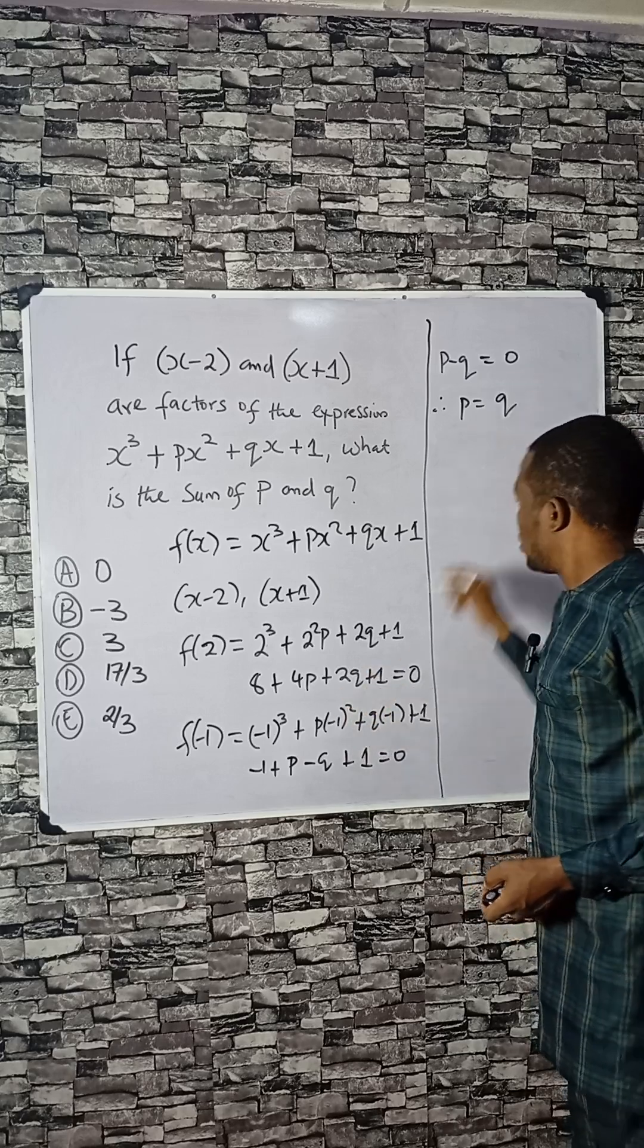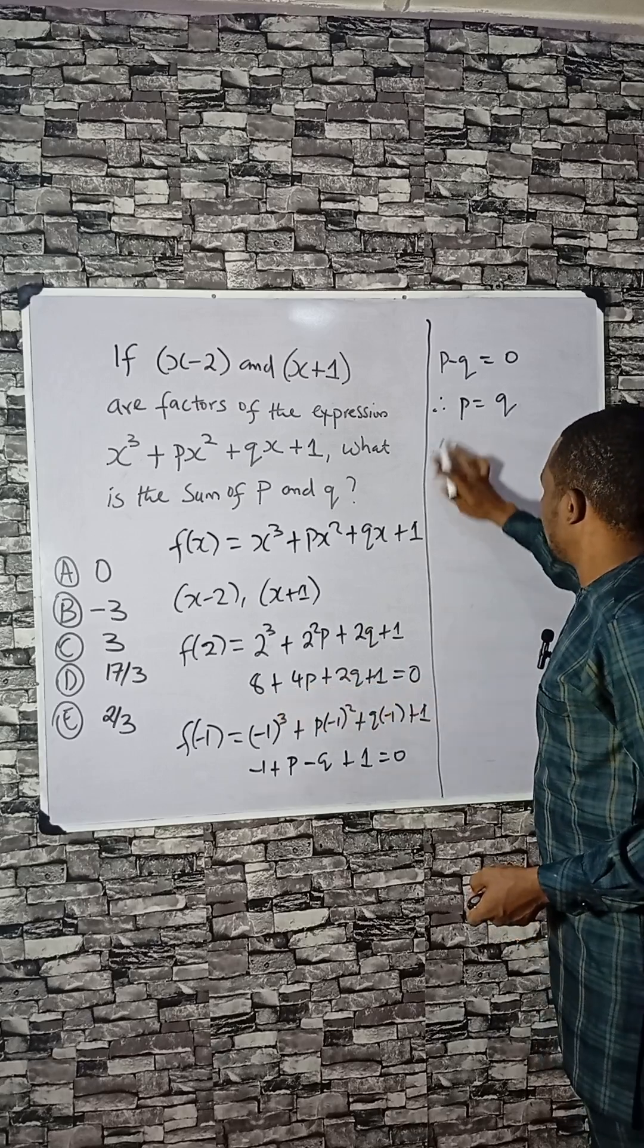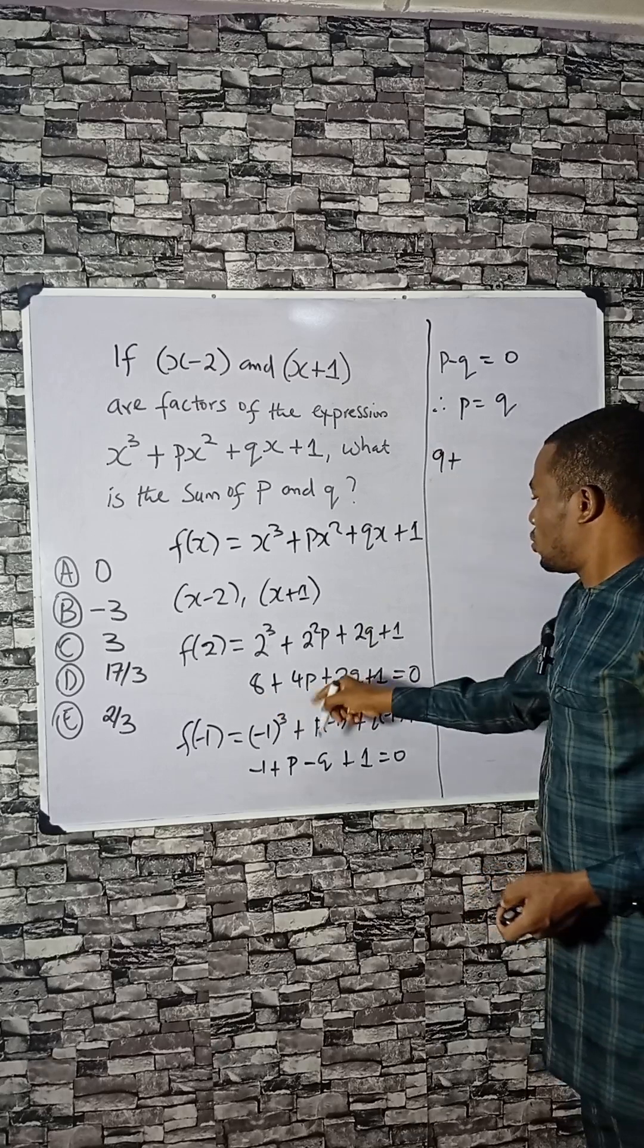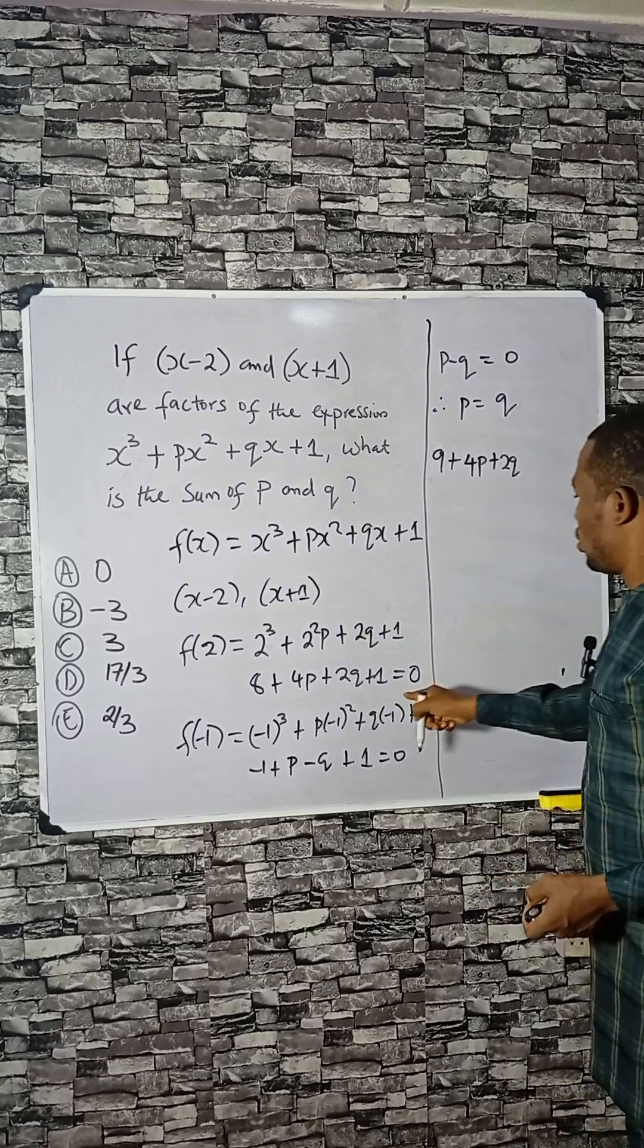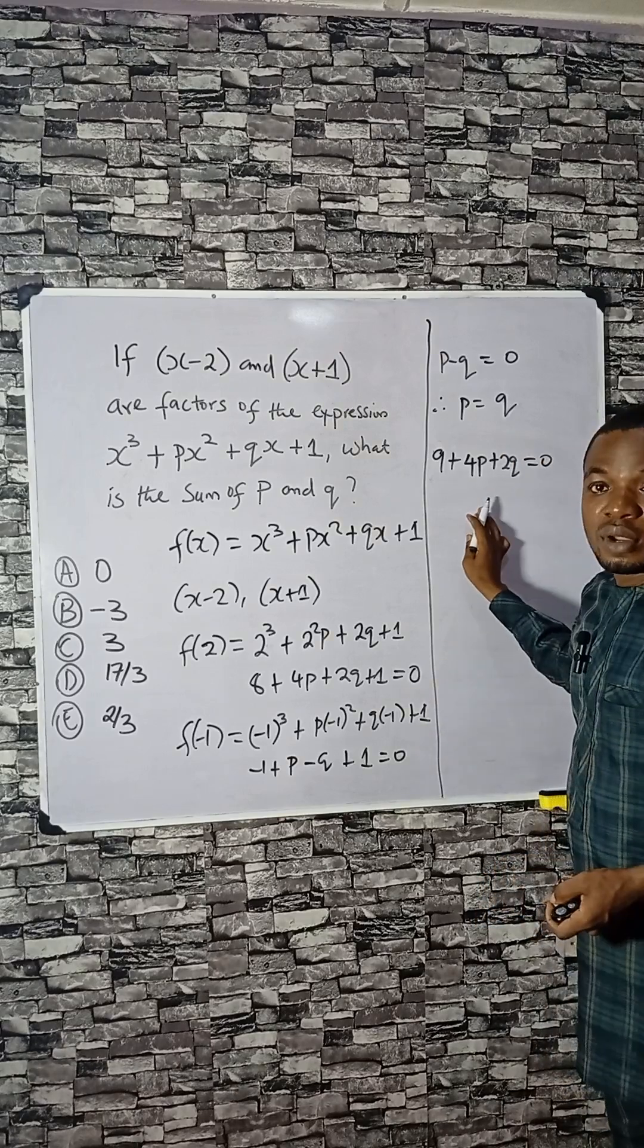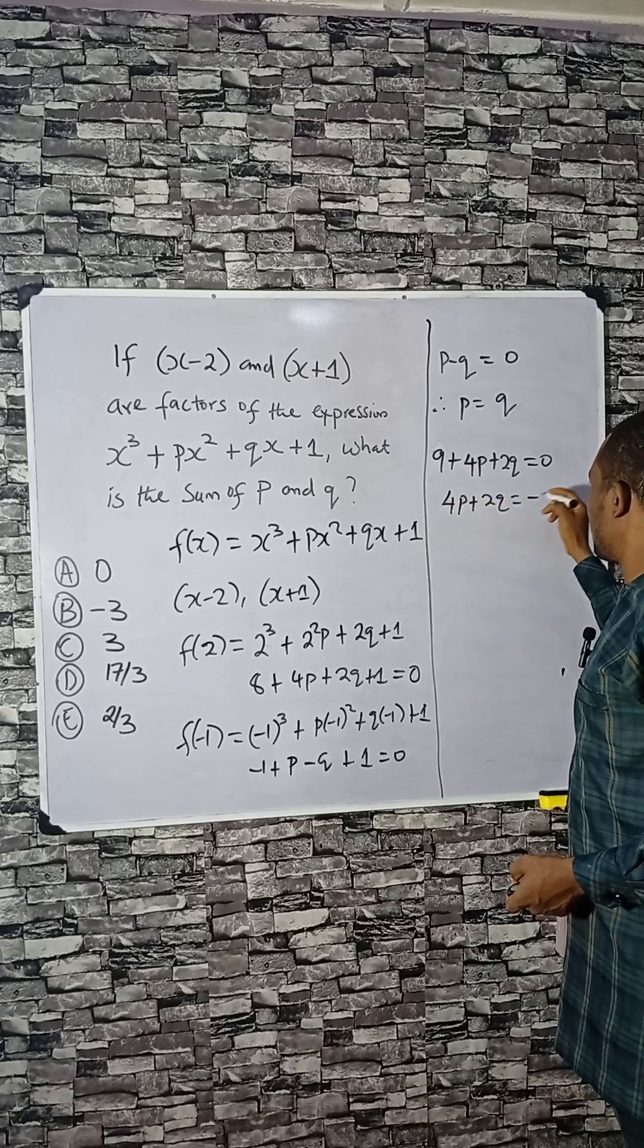We go back to this equation. Now we have 8 plus 1, that is 9. So 9 plus 4p plus 2q equals 0. We can rearrange this equation to have 4p plus 2q equals minus 9.